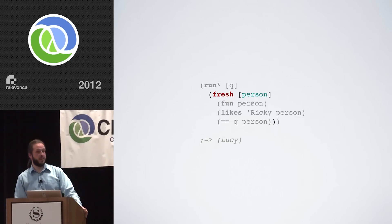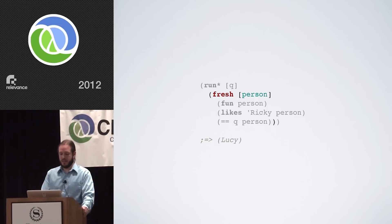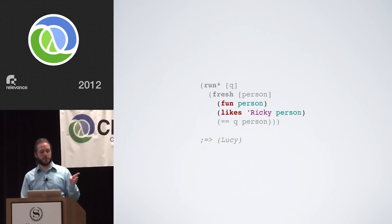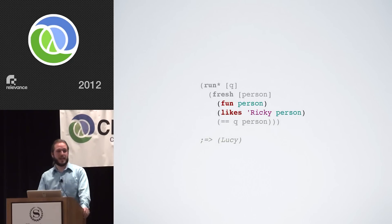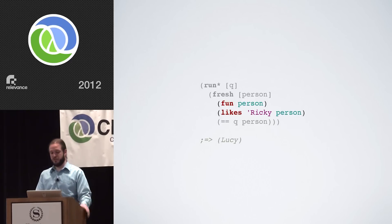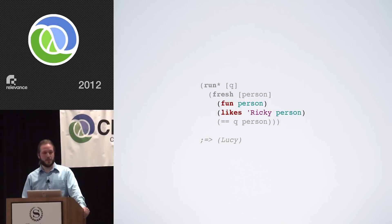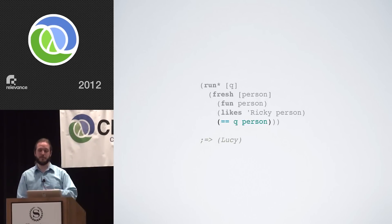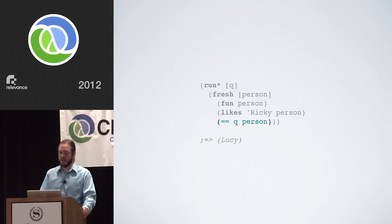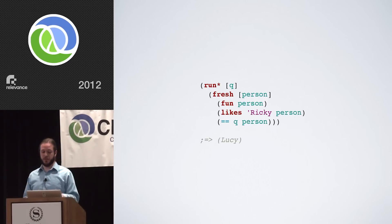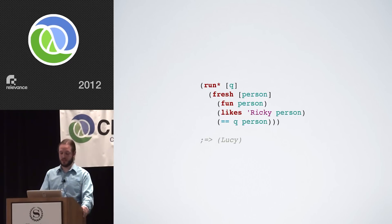Going next, we set up some nicely named fresh logic variables — in this case, a variable called person. Then we ask things about that person: is the person fun, and is the person liked by Ricky? Because these phrases are side by side with no other control structures, these are conjunctive — an and relationship. Both must be true for the whole run to succeed. Finally, if those two things hold, we take the person found and bind it to q, which becomes the return value. The only person who satisfies all those constraints is Lucy — a sequence with a single answer.